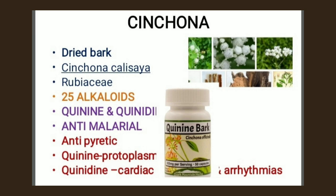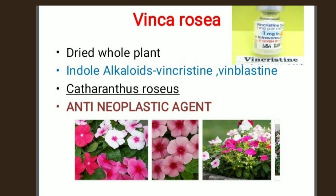The next one is Vinca rosea. Vinca rosea is the dried whole plant of Catharanthus roseus. Its family is Apocynaceae and it consists of indole alkaloids, namely vincristine and vinblastine. It is used as an antineoplastic agent.